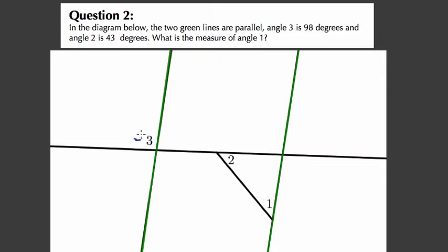This angle right here is 98 degrees. Angle 2 is 43 degrees. What is the measure of angle 1?